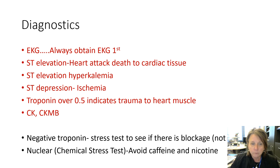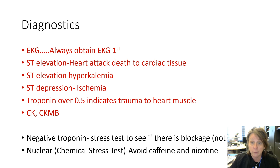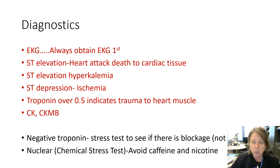If troponin is negative but there's still concern, the patient may have some blockage without an active heart attack. In that case, a stress test is done — either physical on a treadmill, or a nuclear or chemical stress test. For a treadmill stress test, the patient should be NPO and we hold any medications causing vasodilation, as well as caffeine, stimulants, or nicotine. The same applies for chemical stress tests. If chest pain occurs during the test, stop immediately and notify the physician.